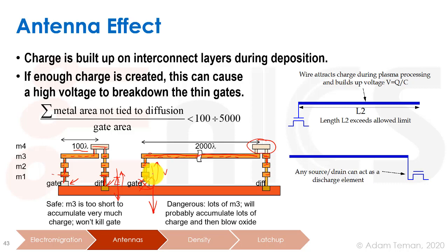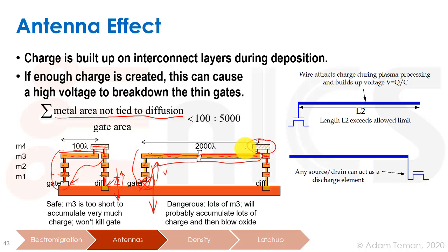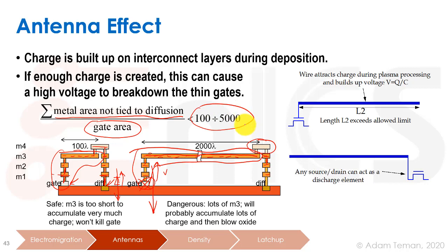We can't allow that to happen. We must look at the total amount of metal area not tied to a diffusion and divide that by the gate area. This ratio has a threshold — typically between 100 and 5000, depending on the manufacturing process and technology node. We must ensure we do not exceed that ratio, otherwise there's a high probability that during manufacturing we'll burn out gates and the circuit won't work.